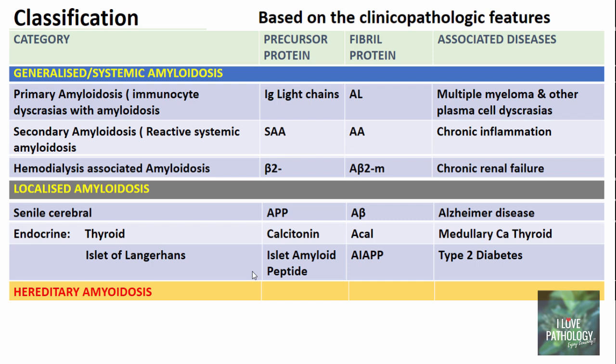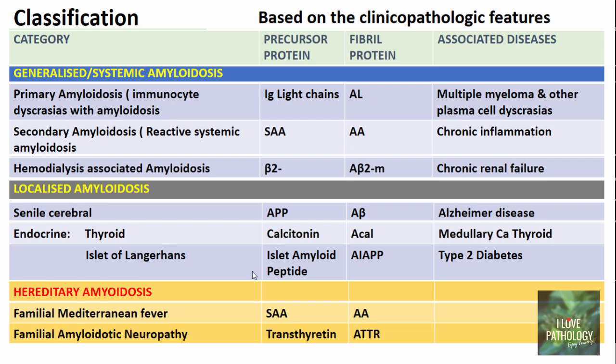The third distinct category is hereditary amyloidosis, with three subcategories. One: familial Mediterranean fever, where the precursor protein is SAA and the fibrillar protein is AA. Two: familial amyloidotic neuropathy, where the precursor protein is transthyretin and the fibrillar protein is ATTR. Three: systemic senile amyloidosis, where the precursor protein is again transthyretin and the fibrillar protein is ATTR. This is how amyloidosis is classified.